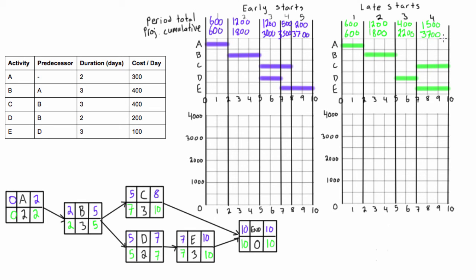Now we'll graph the project S curves — one for early starts, one for late starts — then combine them for comparison. For the early starts: end of period one is at about $600, end of period two at $1,800, end of period three at $3,000, end of period four at $3,500, and we finish at $3,700. Connecting the dots gives us a nice project S curve for cumulative costs based on early starts.